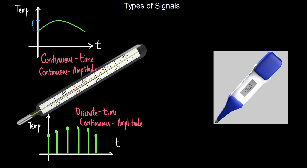The signals for which the amplitude is a continuous quantity are referred to as analog signals. The term 'analog' always refers to the amplitude. If the amplitude is continuous, it is called an analog signal.